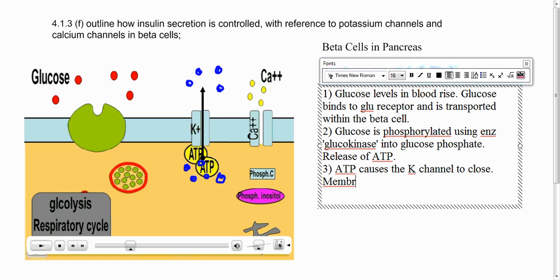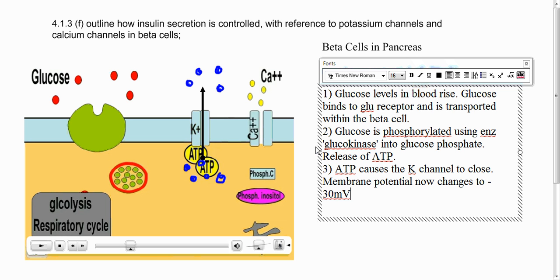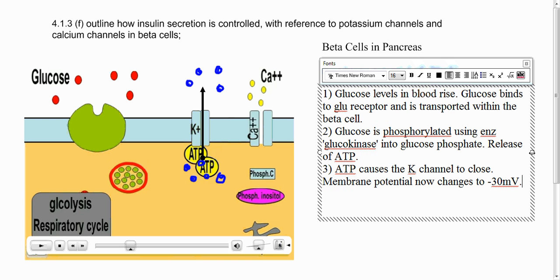So the membrane potential now changes to a value of -30. So it's not quite as negative as it was before. It was -70 before. Now it's -30. And what that means is then that stimulates the calcium channel to then open. You may be able to see where this is heading now, because you should know a little bit about what's going to happen when calcium floods into the cell.